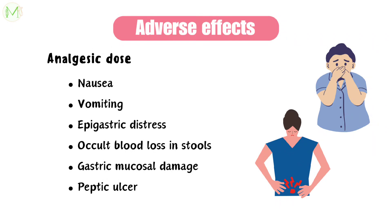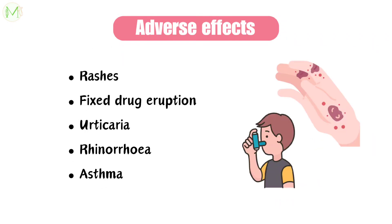These adverse effects vary with different doses of aspirin. At analgesic dose, it causes nausea, vomiting, epigastric distress, occult blood loss in stools, gastric mucosal damage, and peptic ulcer. Rashes, fixed drug eruption, urticaria, rhinorrhea, and asthma are all infrequent adverse effects but they can be very serious.